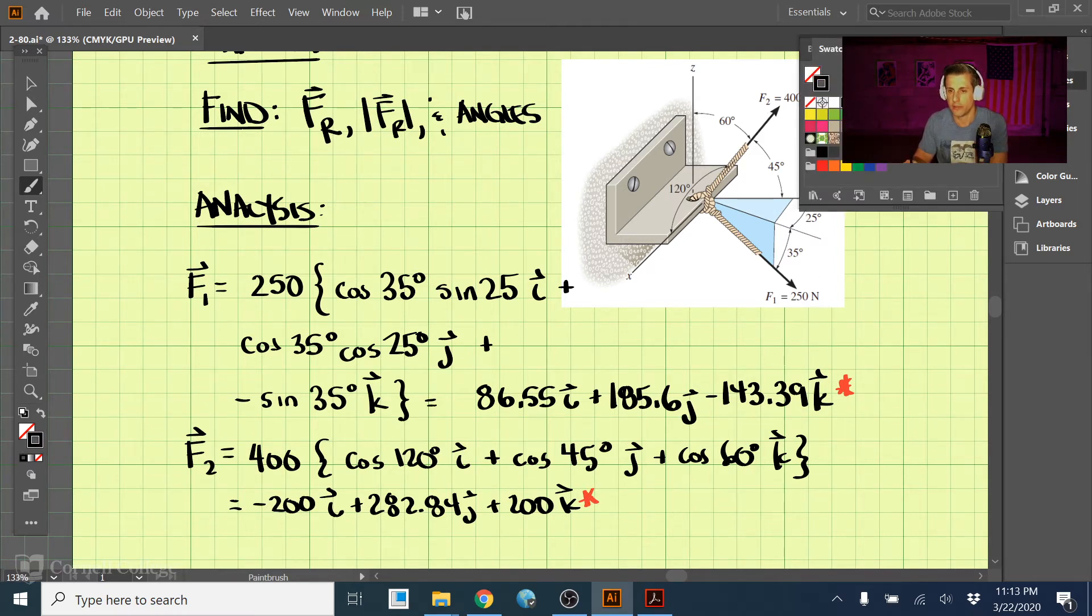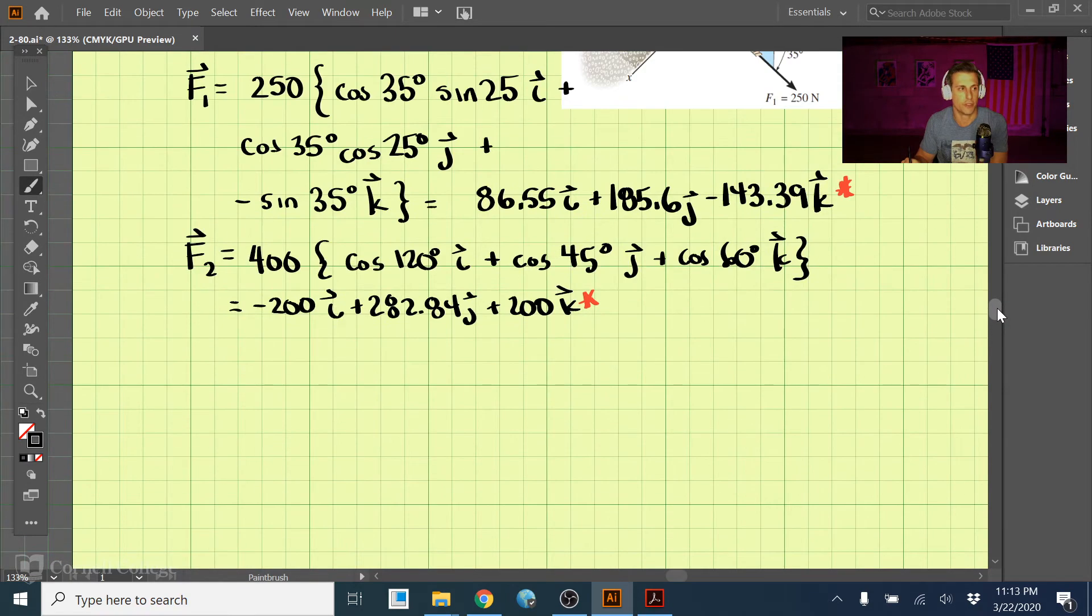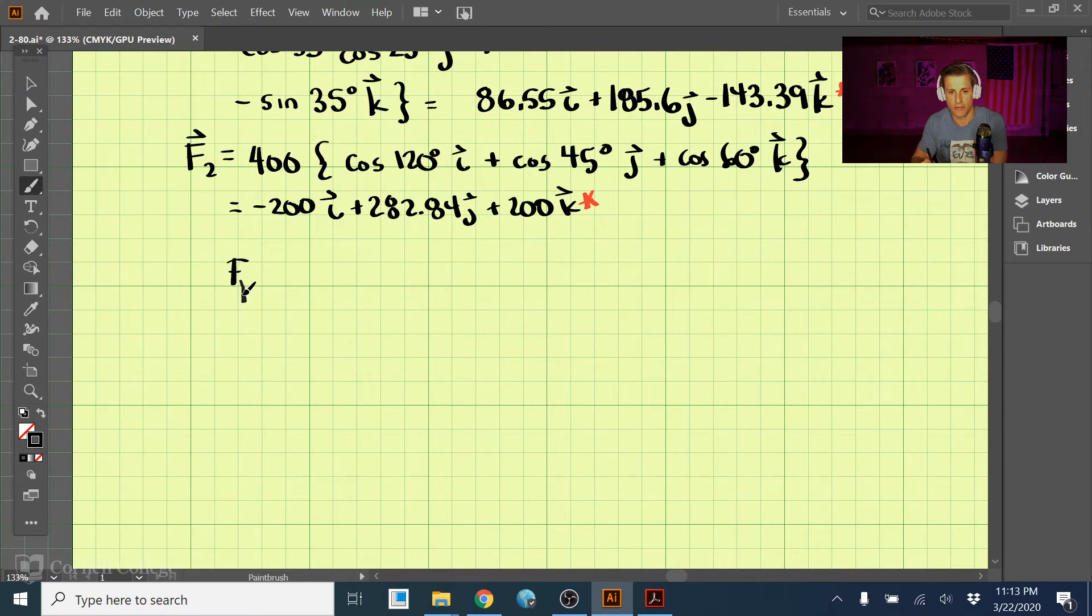To find the resultant vector, all we need to do is add those two together. So taking F1 and F2 together, we have F resultant r is equal to F1 plus F2, and if we do that we come out with negative 113.45i plus 468.44j plus 56.61k. So this is our F1 plus F2.